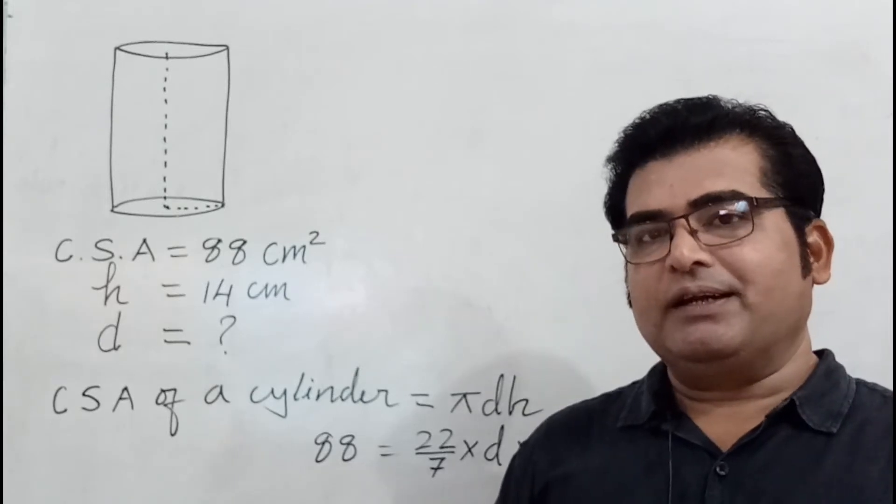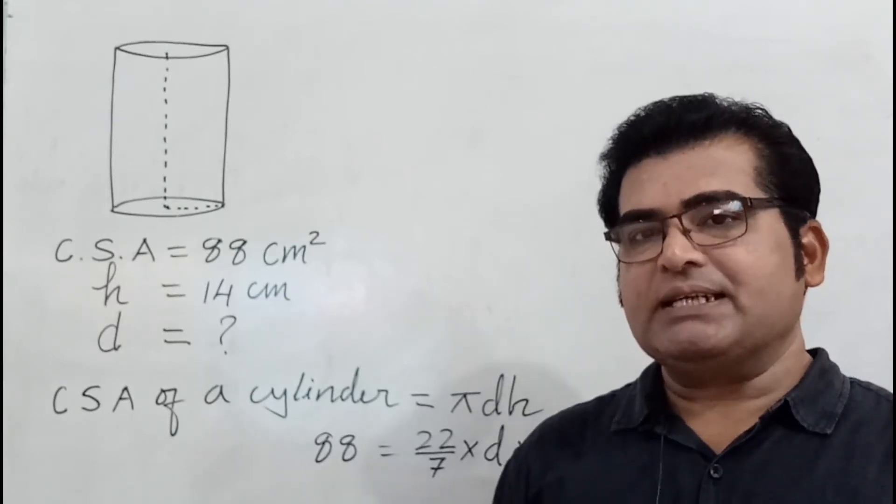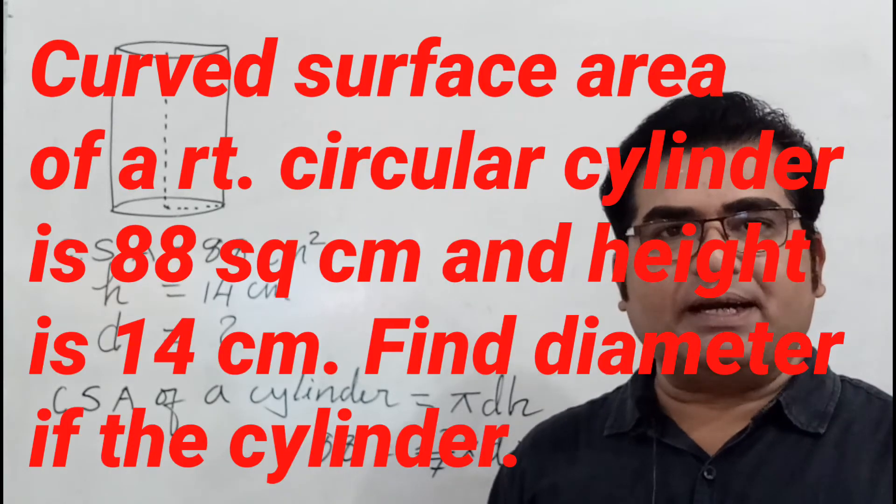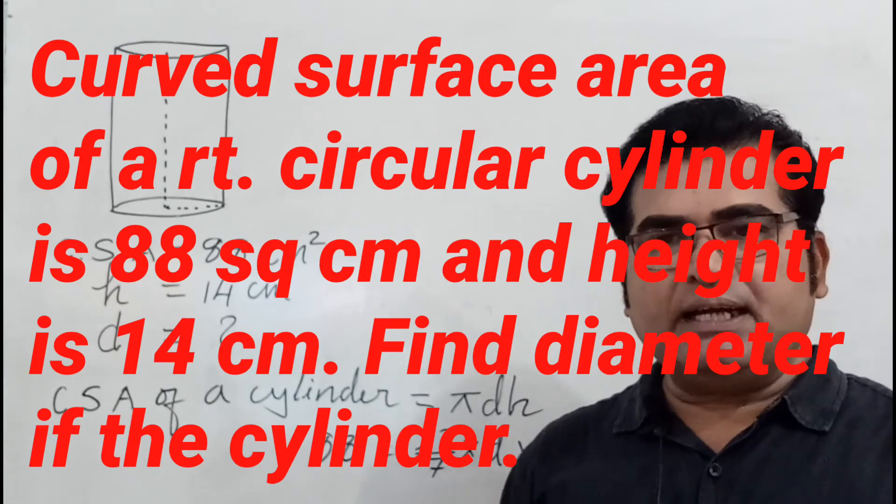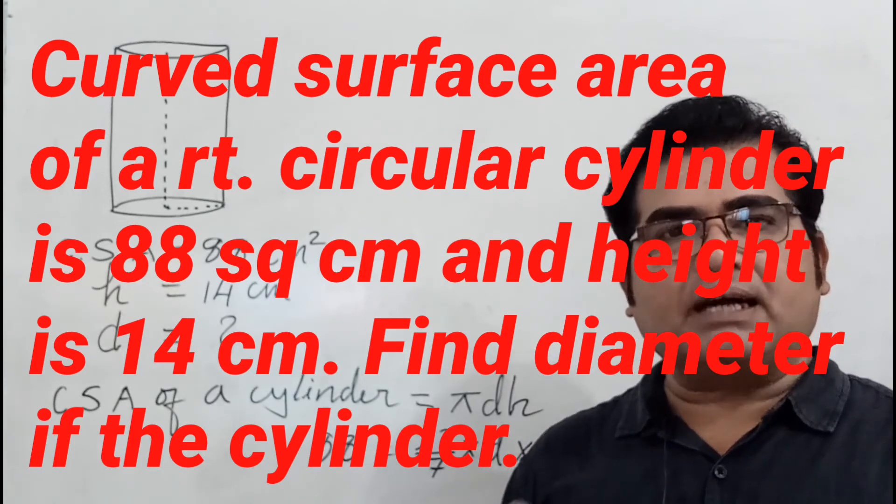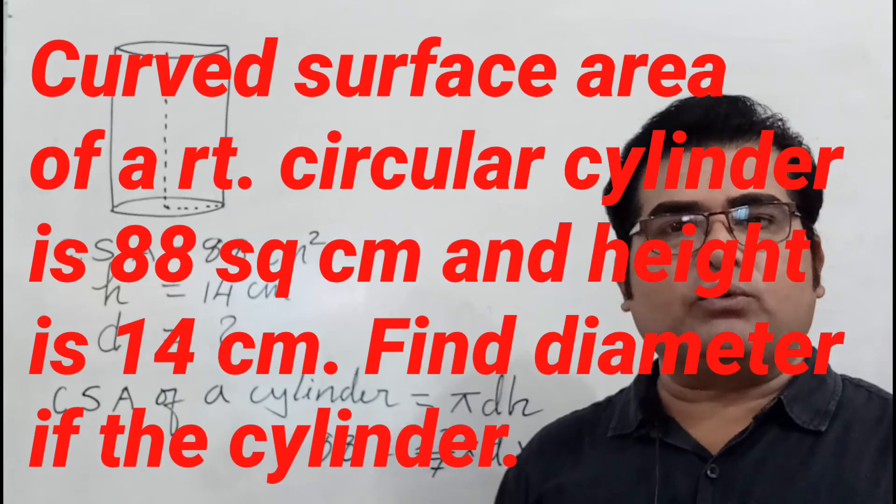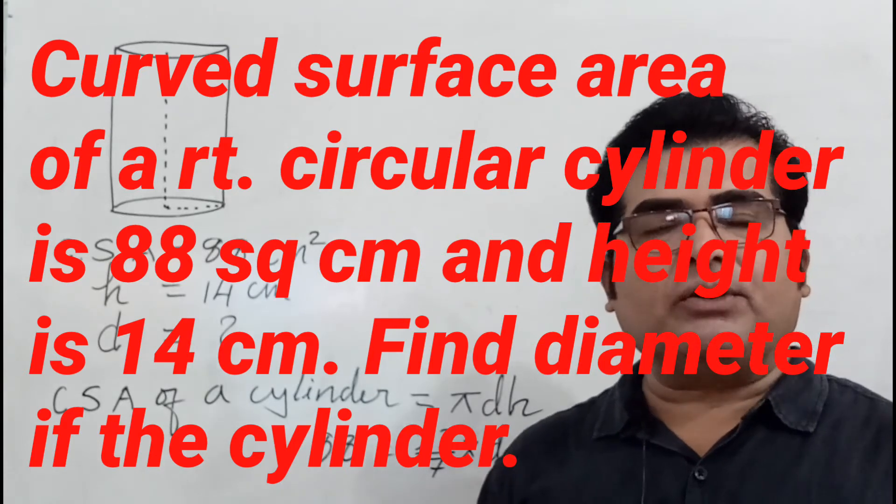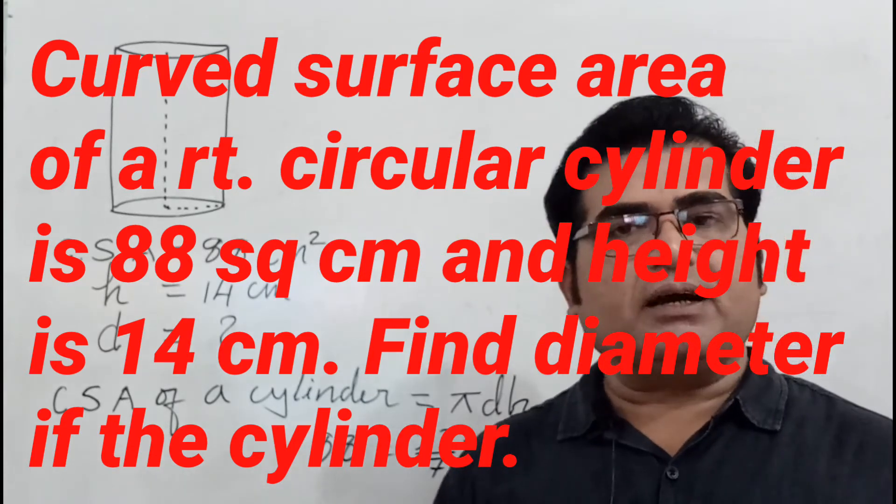Let's solve a question related to cylinders. The question is: the curved surface area of a right circular cylinder is 88 square centimeters and its height is 14 centimeters. What is the diameter of the cylinder?